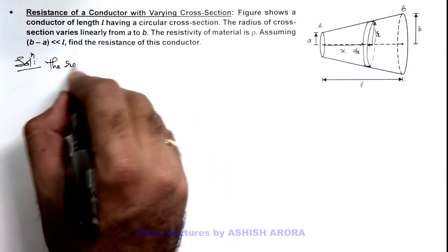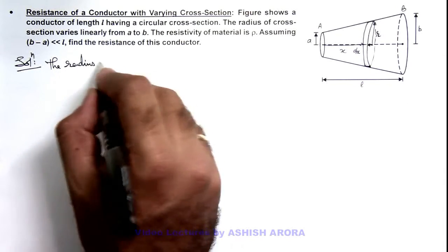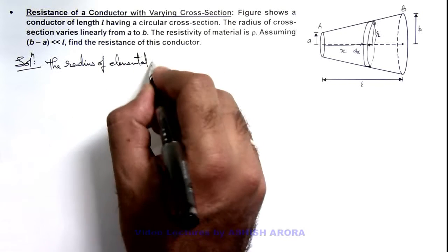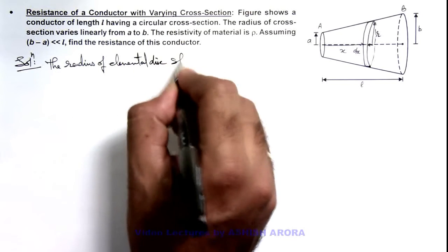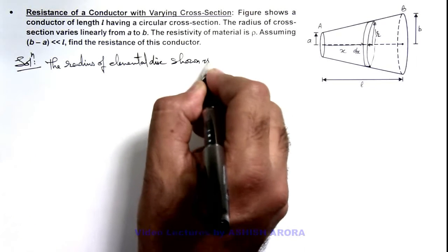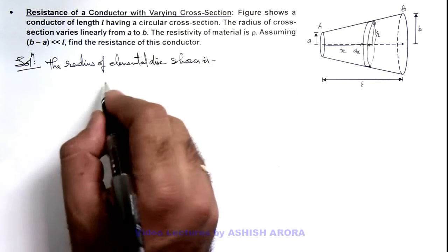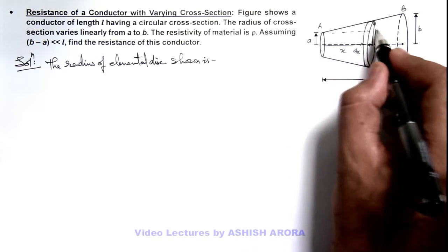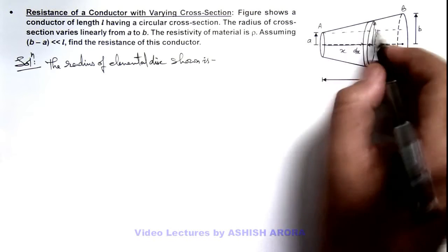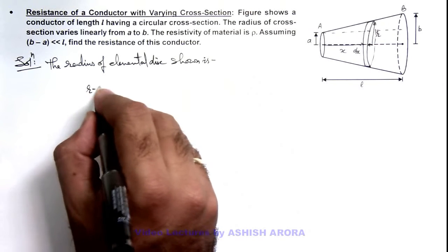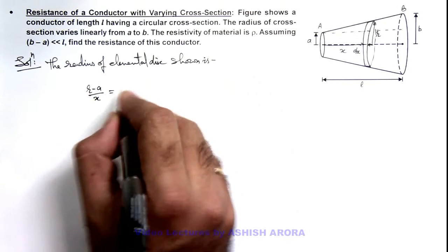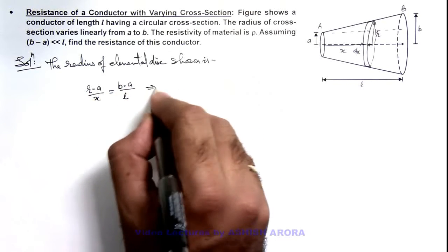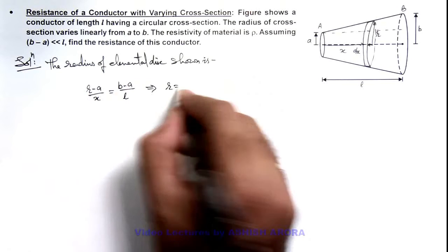The radius of the elemental disc shown is r. We can calculate this by similarity of triangles—this distance is x and the whole distance is l. So here I can write (r - a)/x = (b - a)/l.